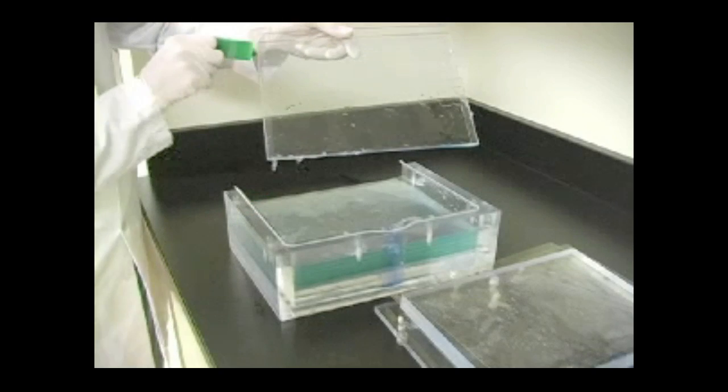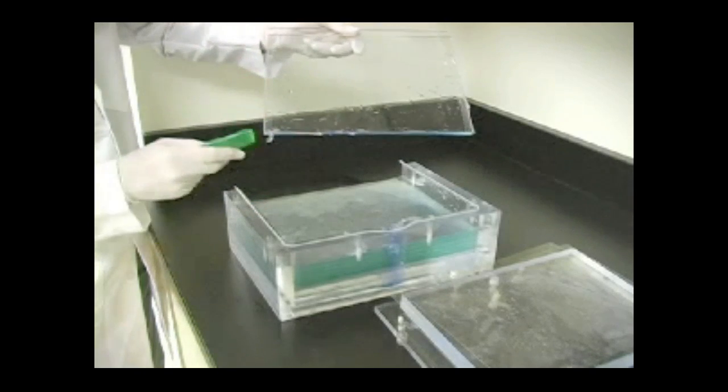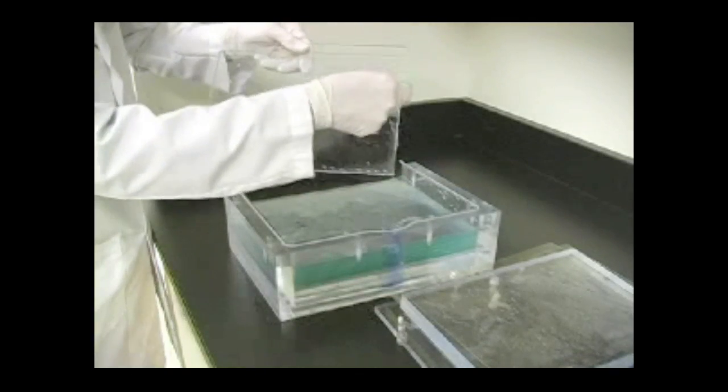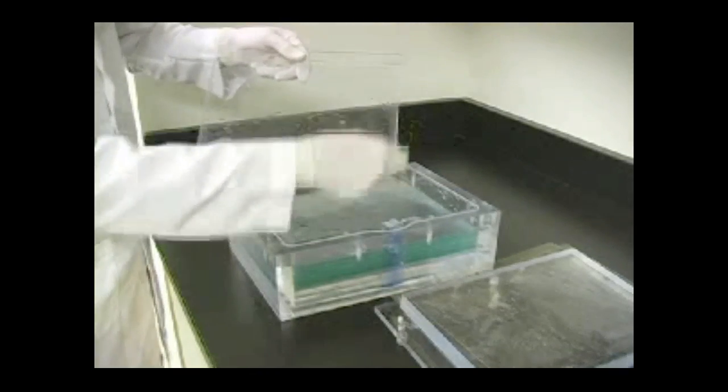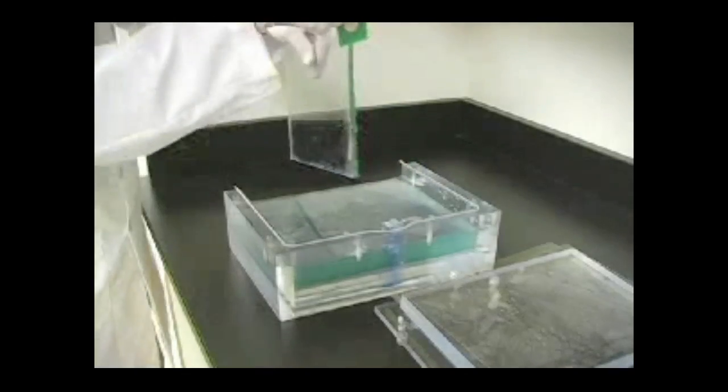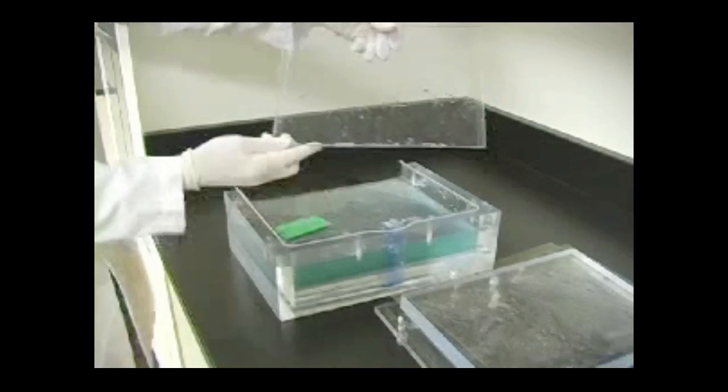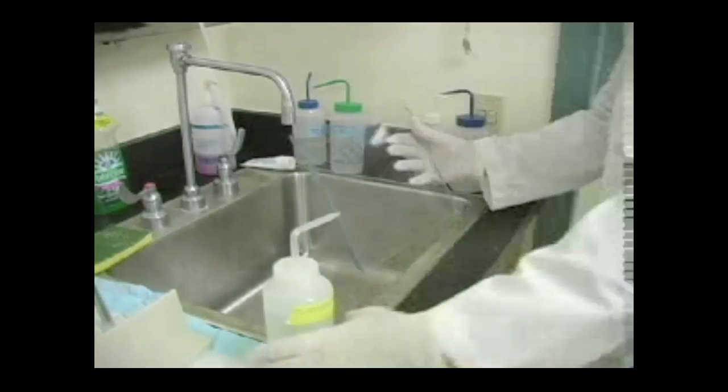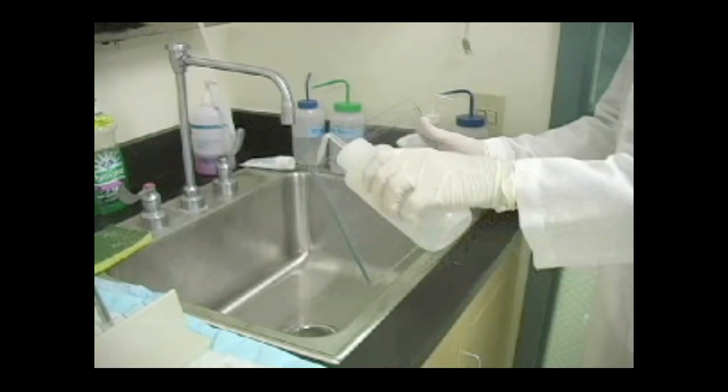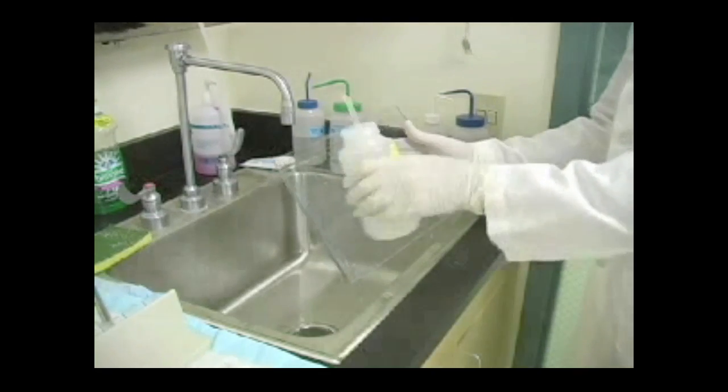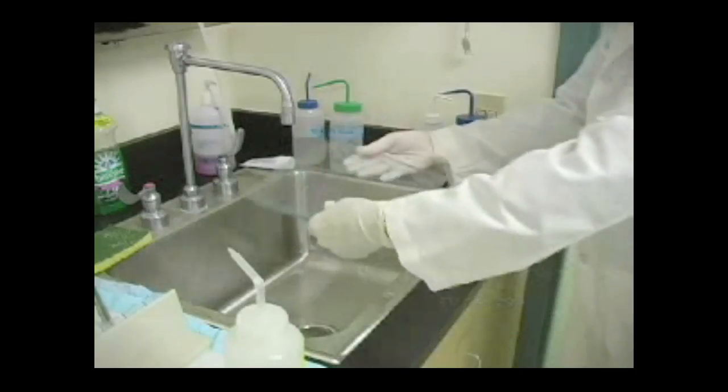Trim off excess acrylamide around the glass edges with the gel releaser. Rinse off the tops of all the gels thoroughly with distilled water. Wash off any pieces of excess acrylamide with distilled water.